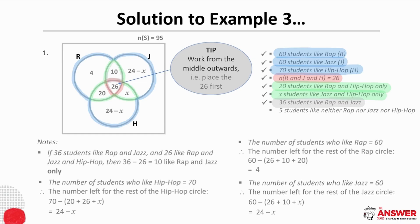And then the last statement says that five students like neither Rap nor Jazz nor Hip Hop. And so we need to place five outside the three circles, but still in the sample space of students from the poll. And that is the Venn diagram. Maybe pause the video again now if you would like to give any of these steps some extra thought.